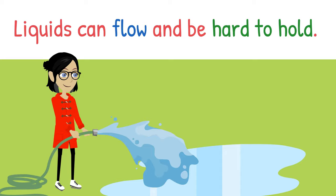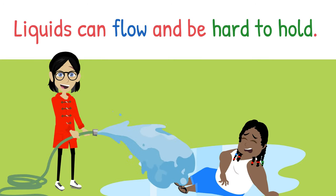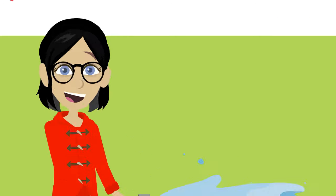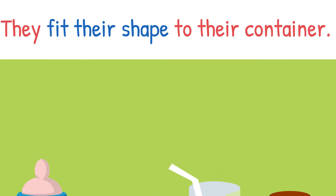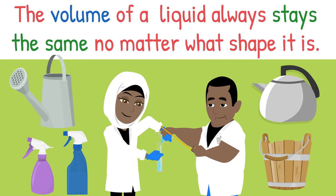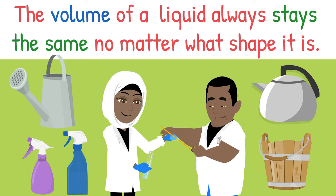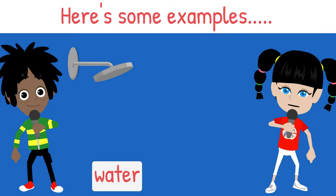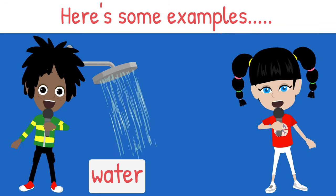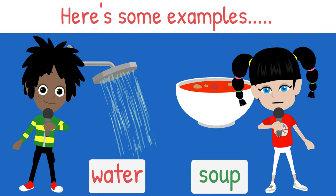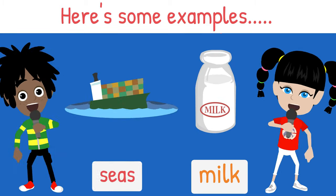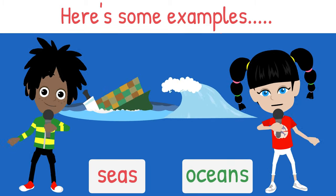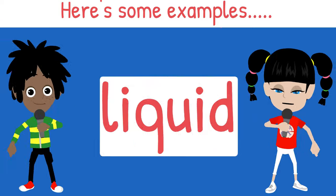Liquids can flow and be hard to hold. They fit their shape to their container. The volume of a liquid always stays the same, no matter what shape it is. Here's some examples: water is liquid, soup is liquid, rain is liquid, milk is liquid, seas are liquid, oceans are liquid.